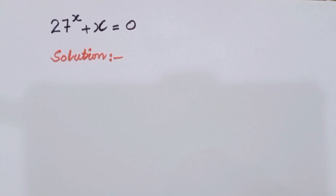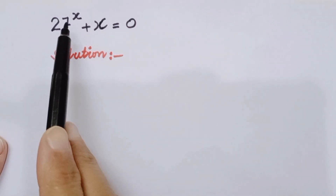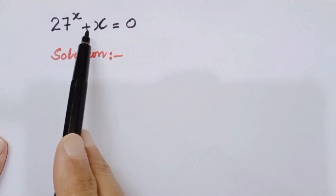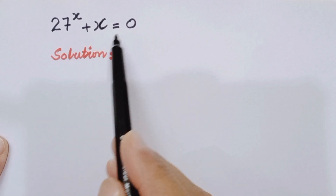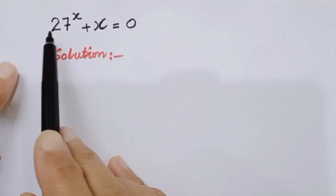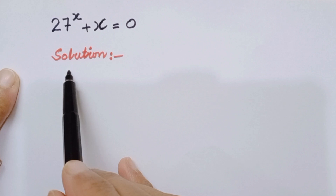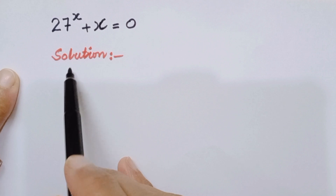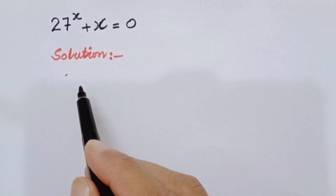Hello everyone, welcome to my channel Brainy Equations. Today we are going to solve the equation 27 to the power x plus x is equal to 0. We will find out the value of x from this equation. I will use two methods to solve this question.